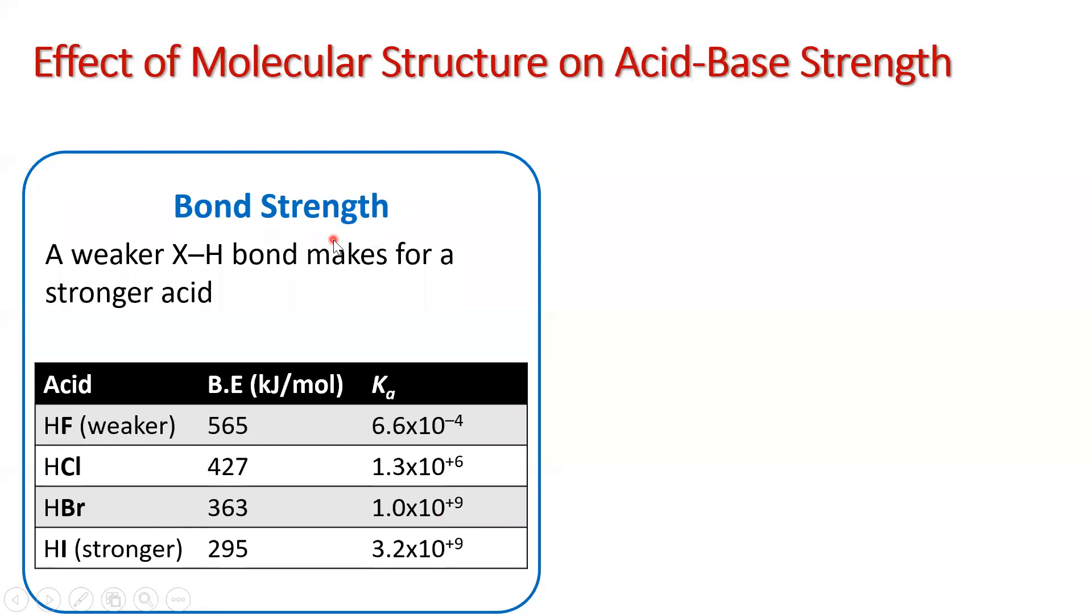So when we look at bond strength, we've got whatever X is bonded to hydrogen. This is the bond. Now in order to talk about the strength of the bond, or the strength of the acid, we're talking about the ability to break this bond. The easier this bond can be broken, the stronger the acid is.